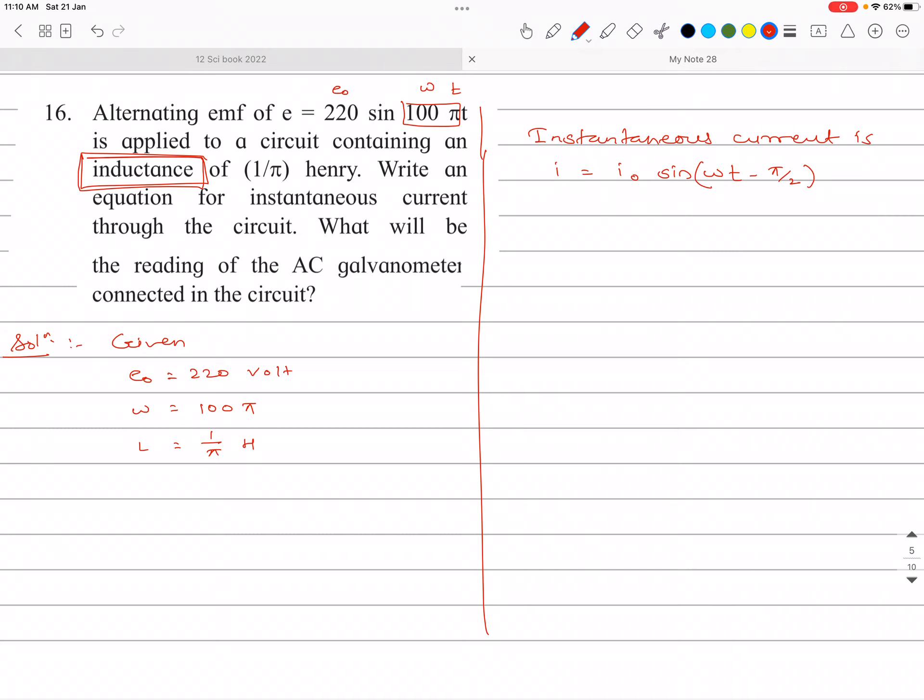We need to find I0, the peak value of current. By Ohm's law, I0 = E0/XL, where XL = ωL. Substituting the given values: I0 = 220/(100π × 1/π). The π terms cancel, giving 220/100 = 2.20 amperes. This is the peak value of the current.